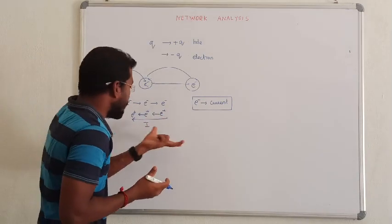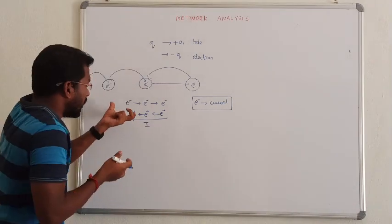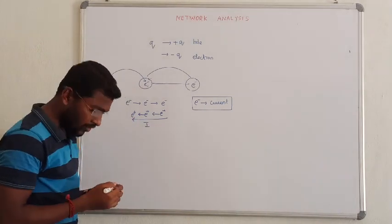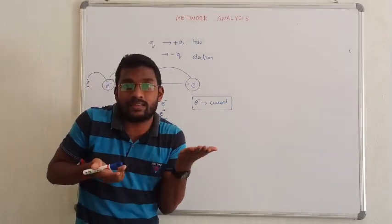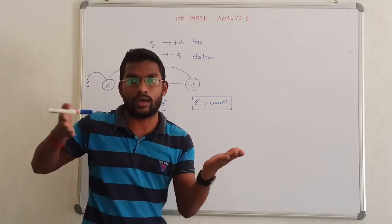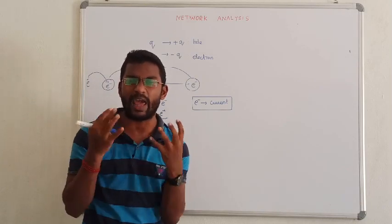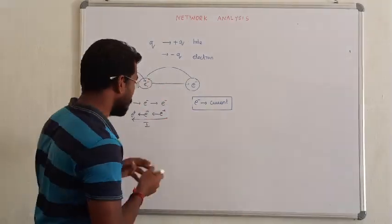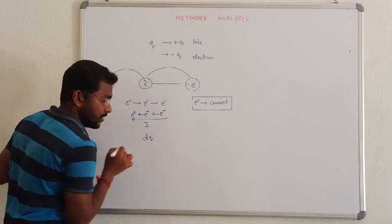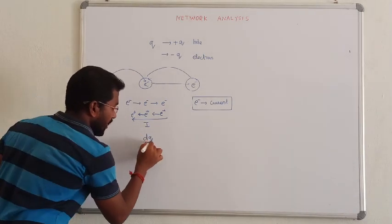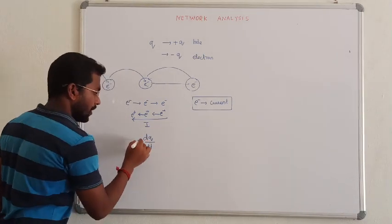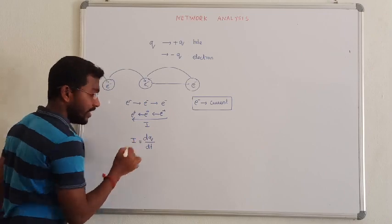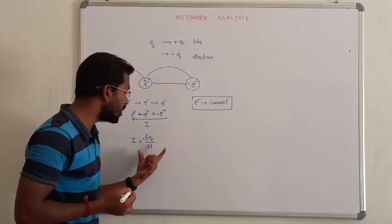For example, I have only one electron. If you have conductors, there are lakhs and lakhs of electrons flowing from one point to another point. If the charge is keep on varying, changing with respect to time, obviously it will be defined as current. So that is I is equal to dq by dt. That is the relation between current and charge.